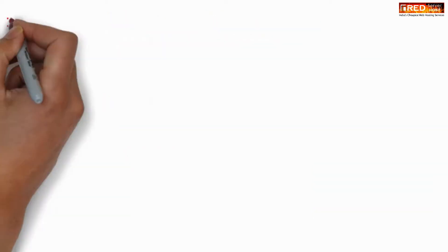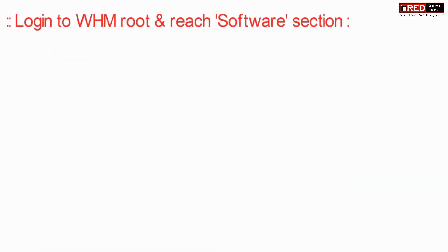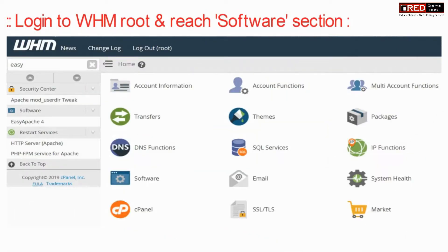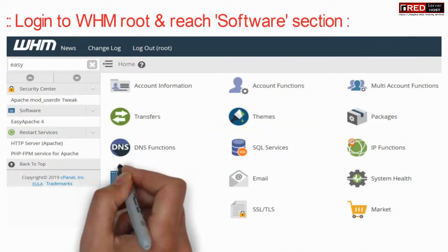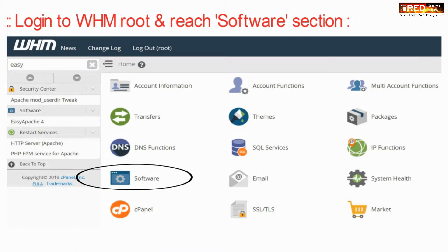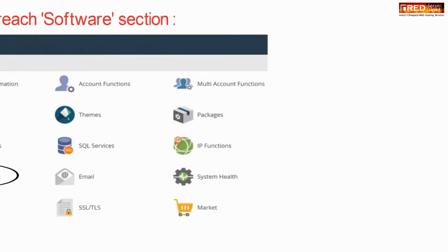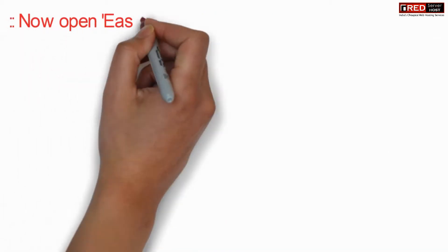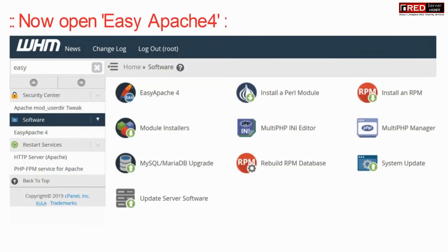To do that, login to WHM root and then reach the Software section. Now open Easy Apache 4.